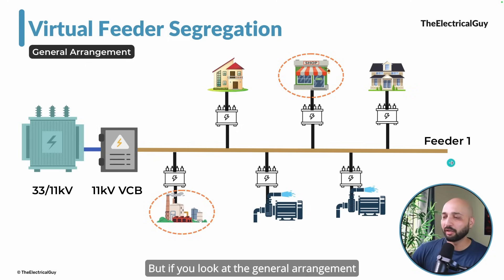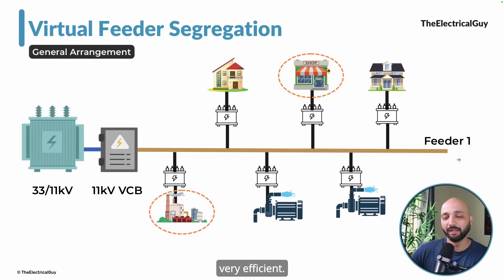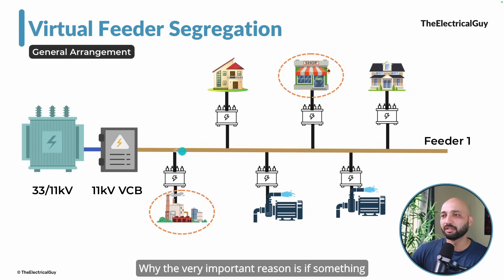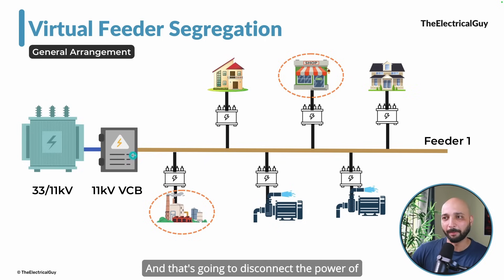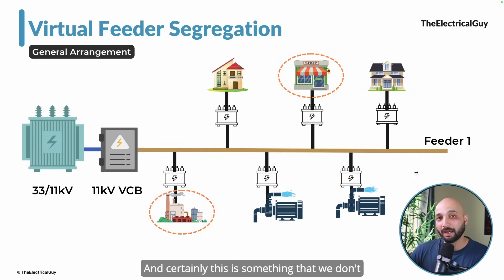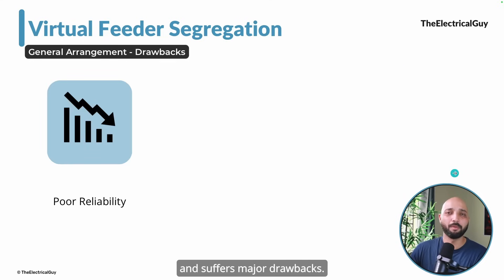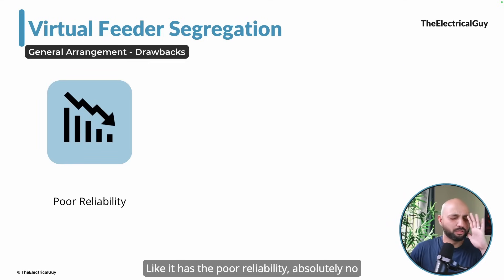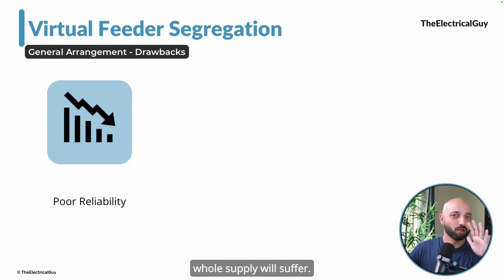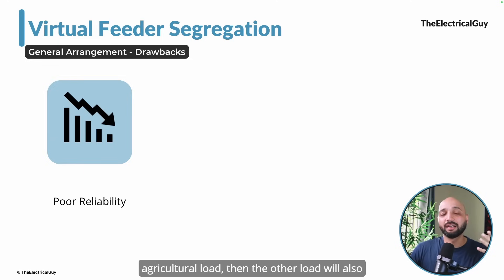This general arrangement is not very efficient. If something goes wrong or if we want to disconnect the agricultural load, we will have to open the vacuum circuit breaker, and that's going to disconnect the power for every single load connected to this feeder. This is something we don't want, and our customers will not be happy — the distribution utility will be in trouble.